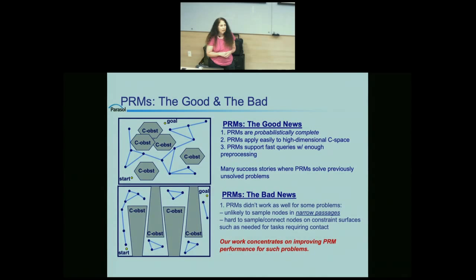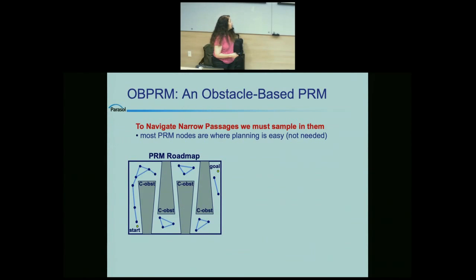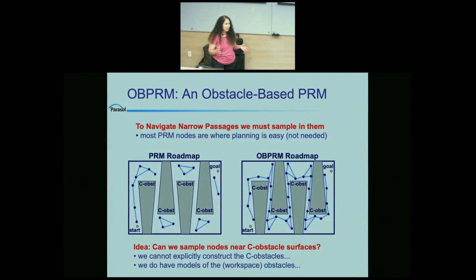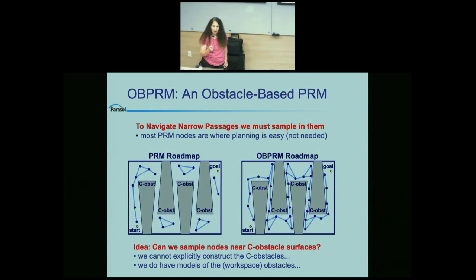What we'd really like is to have samples near the configuration space obstacle surfaces. But the complexity of constructing those surfaces is very high — we can't afford to construct them, and we don't have access to them. So the challenge is: how can we sample on their surfaces without knowing them? It turns out that in some cases we did have the workspace description of the obstacles, and we weren't using that when doing uniform sampling. That's the idea of the next method.